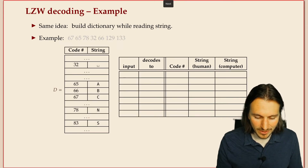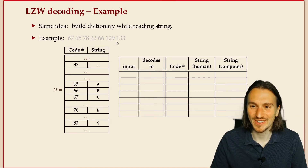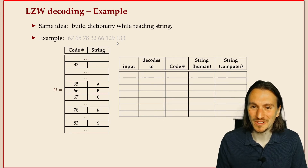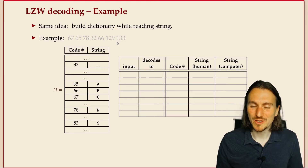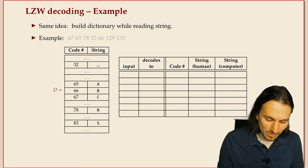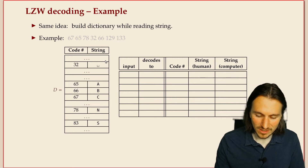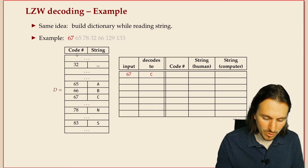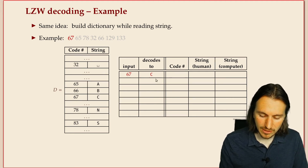We only start adding to the dictionary after the second phrase is decoded. Let's see an example — here's just the coded text, and you'll learn what the decoded text is as we go. We start with a dictionary filled with single character strings. The first code word must already be in our dictionary. In this case it's 'c'. We cannot yet handle the dictionary addition — we need the next character first.